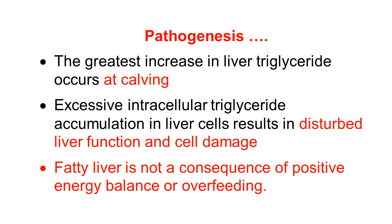Continuing the pathogenesis: the greatest increase in liver triglycerides occurs at calving — the etiology we have already seen. The excessive accumulation of intracellular triglycerides in liver cells results in pathology in the liver; it disturbs overall liver function and causes cell damage. The liver is an important organ, so liver dysfunction and cell damage cause further disturbances throughout the body.